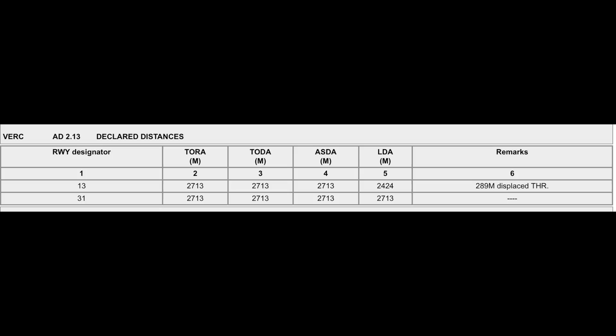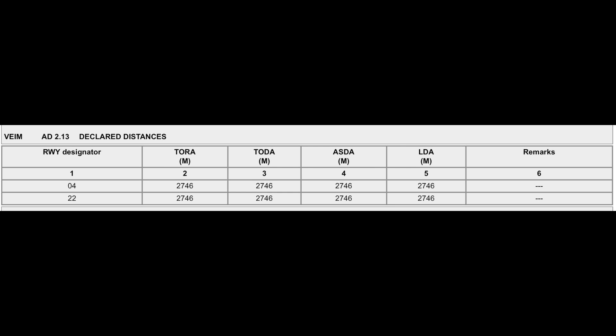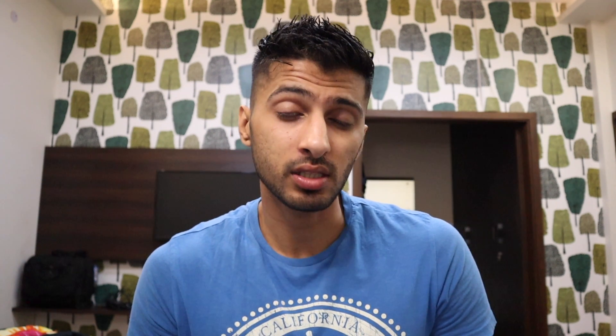Now we'll compare these calculated required distances with what is available at Ranchi and Imphal. From our AIP data, the landing distance available at Ranchi for runway 31 — the ILS runway — is 2,713 meters. Comparing these distances, landing at Ranchi with flaps full gives us an additional 597 meters of runway unused. If you land with flaps 3, you have 482 meters of runway to spare.